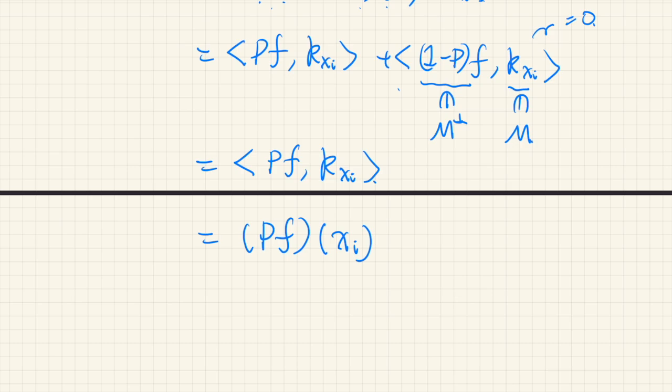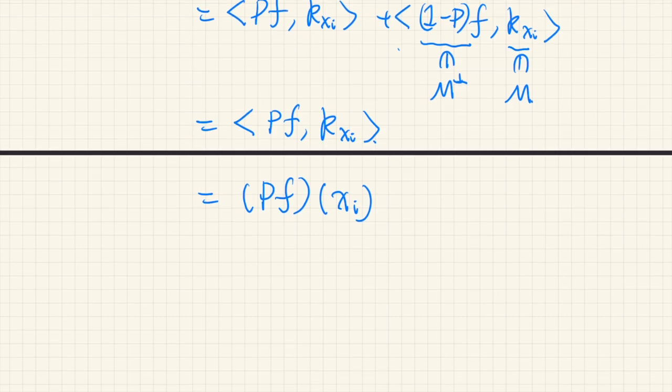And this is equal to Pf evaluated at xi. Therefore, the function f, as long as it is evaluated at one of the data points, is equal to Pf. So, f equals Pf on the data points, data set.